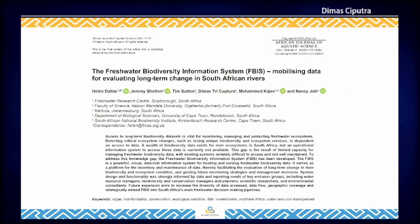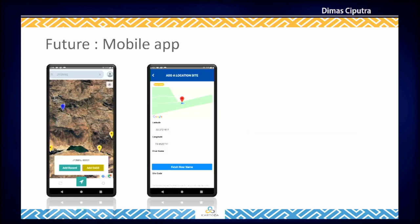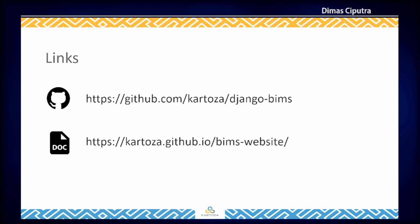We also published an article about FBIS. We built FBIS so it can be easily customized and expanded to other regions. In Rwanda we developed R-BIS, and in Botswana we developed B-BIS. Currently we are busy developing a FBIS mobile app that can work offline so users can collect occurrences on site without internet. FBIS source code and documentation are available online.